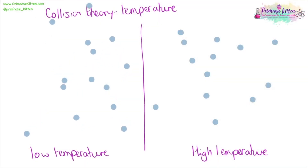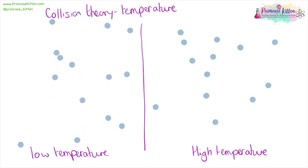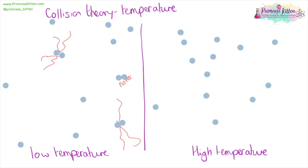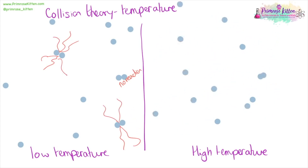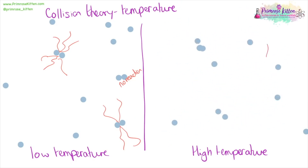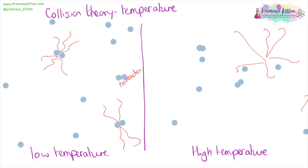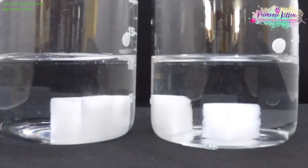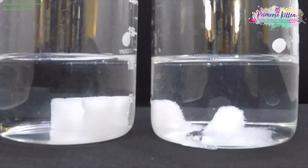When we have particles moving around at a low temperature, they're moving slowly with not much energy. When two collide, they hit each other and may have a reaction, but sometimes they collide and there's no reaction. When particles move around at high temperature, at high speed with lots of energy, when things collide, you are going to get a lot of reactions taking place. Rate of reaction is going to be affected by temperature.